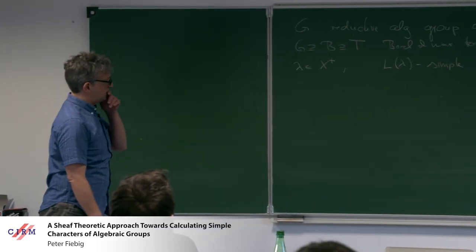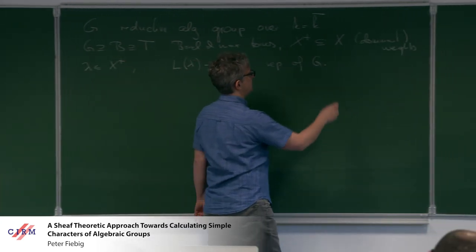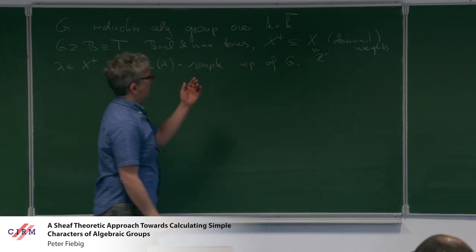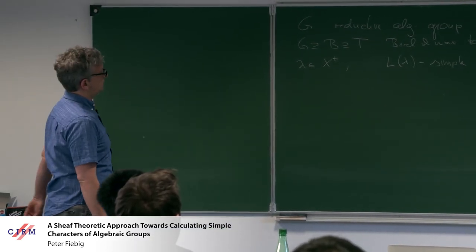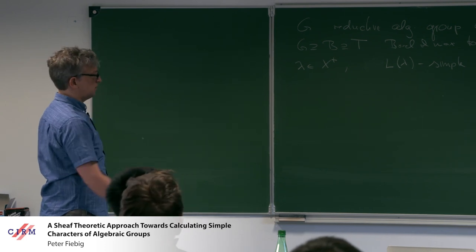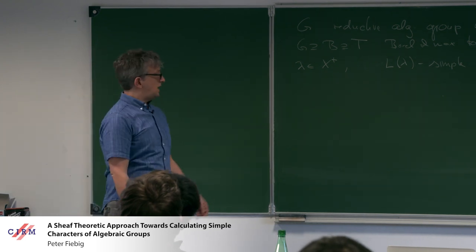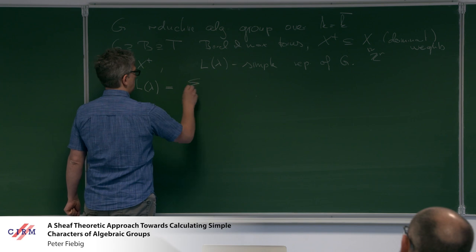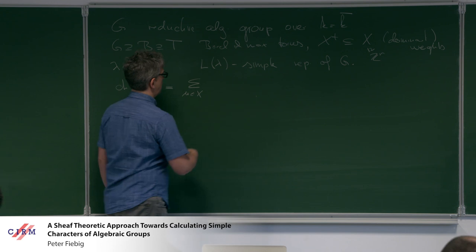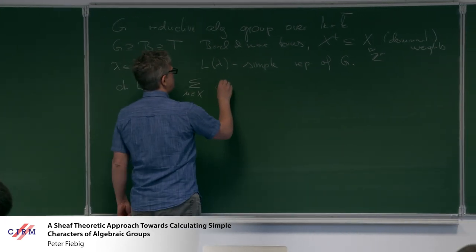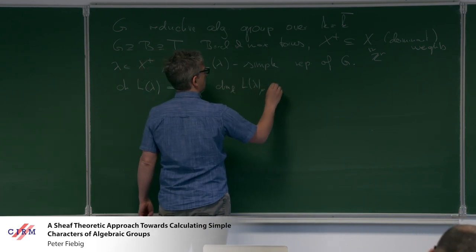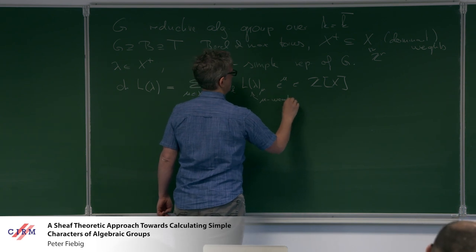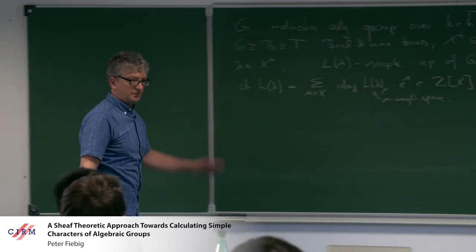So L(lambda) is the simple representation. One of the remarkable things is that the weight lattice X is in some sense independent of the field — it's always a lattice of rank equal to the rank of G. So we can view lambda as something independent of the field, but of course L(lambda) is not. What I want to understand is the character of L(lambda): a sum in the group ring of the k-dimensions of the mu weight spaces.